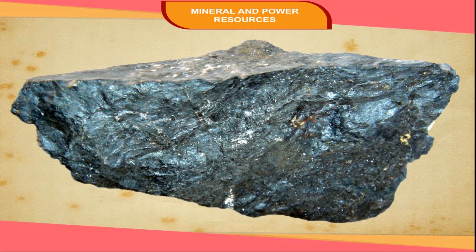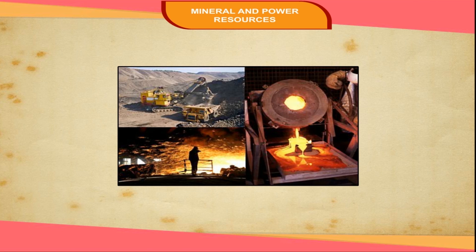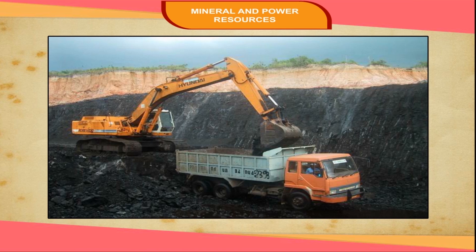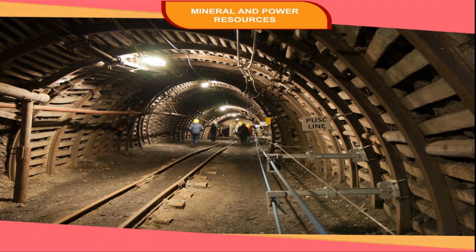Metallic minerals found in their raw state with impurities are called ores. To extract the metal content out of an ore, impurities have to be removed. Ores are rarely found near the surface of the earth; they are extracted from deep within. This process of extraction of minerals from the earth is known as mining, and the opened-up hole is called a mine.